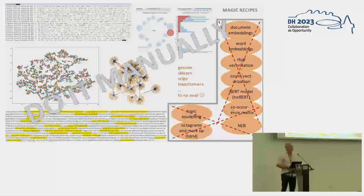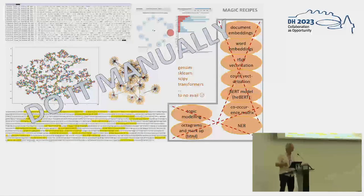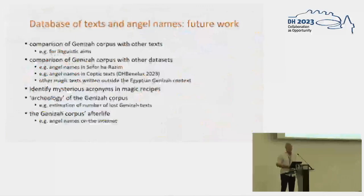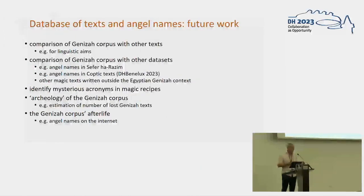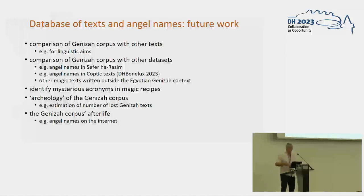In the end, we said: given the size of the corpus, forget the digital approach — do it manually. But that does point towards the future. Once we have this database for the whole Mediterranean basin, with all these angel names in different languages and different cultural settings, you can start doing very interesting things. And this gives you a taste of the future — you can compare the Geniza corpus with other corpora for linguistic purposes, or you can compare it with other data sets containing these angel names.